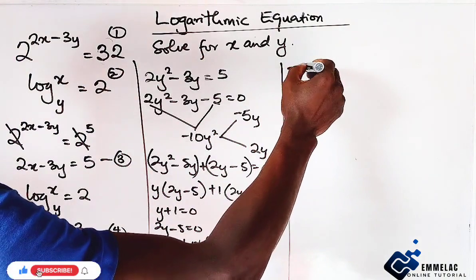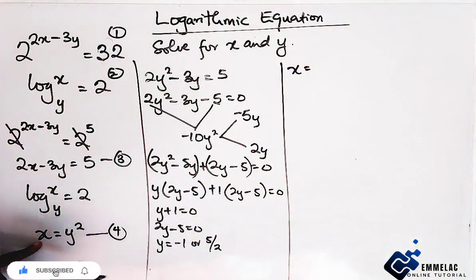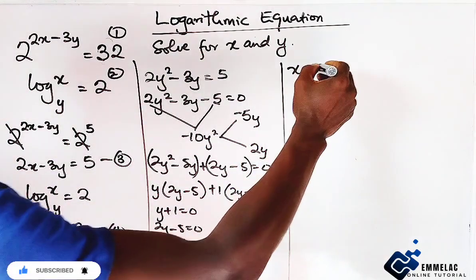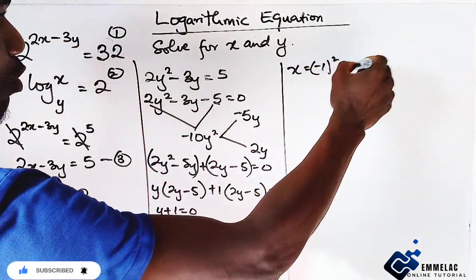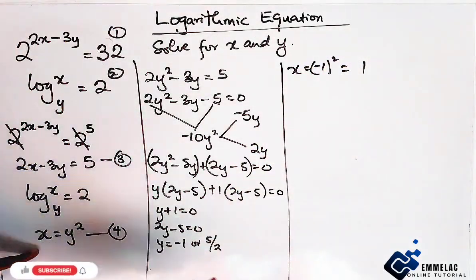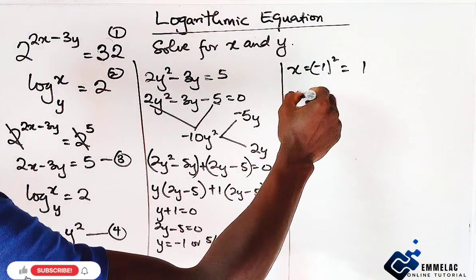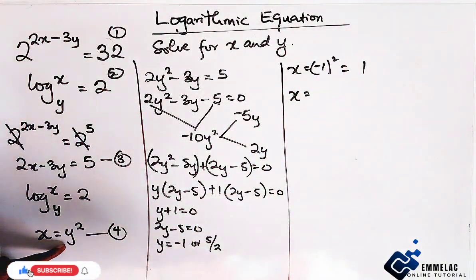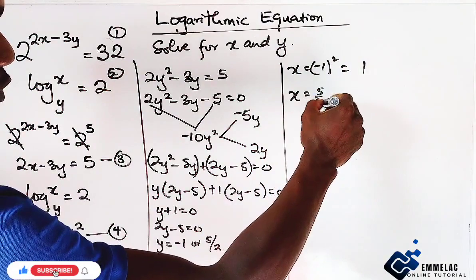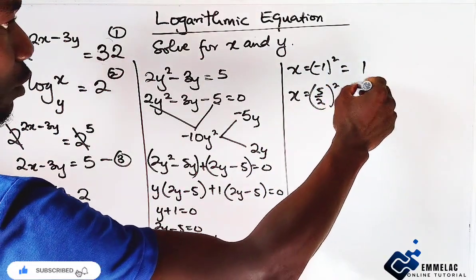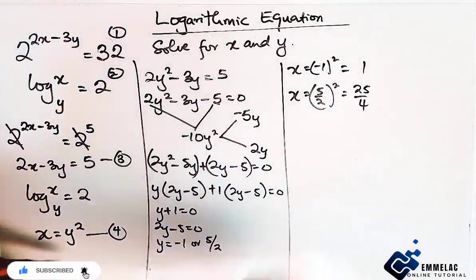Here we have x equals to y to the power of 2. It's plug in. So, minus 1 to the power of 2. Here we have 1. Now, for this, we have x equals 5 over 2 to the power of 2. This will give us 25 over 4.